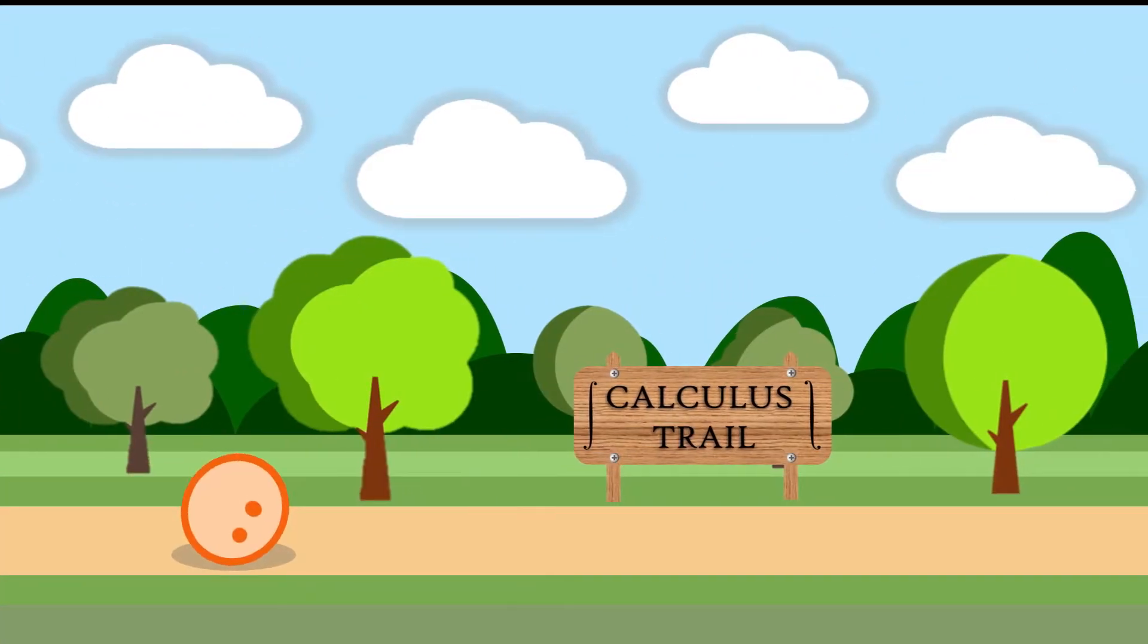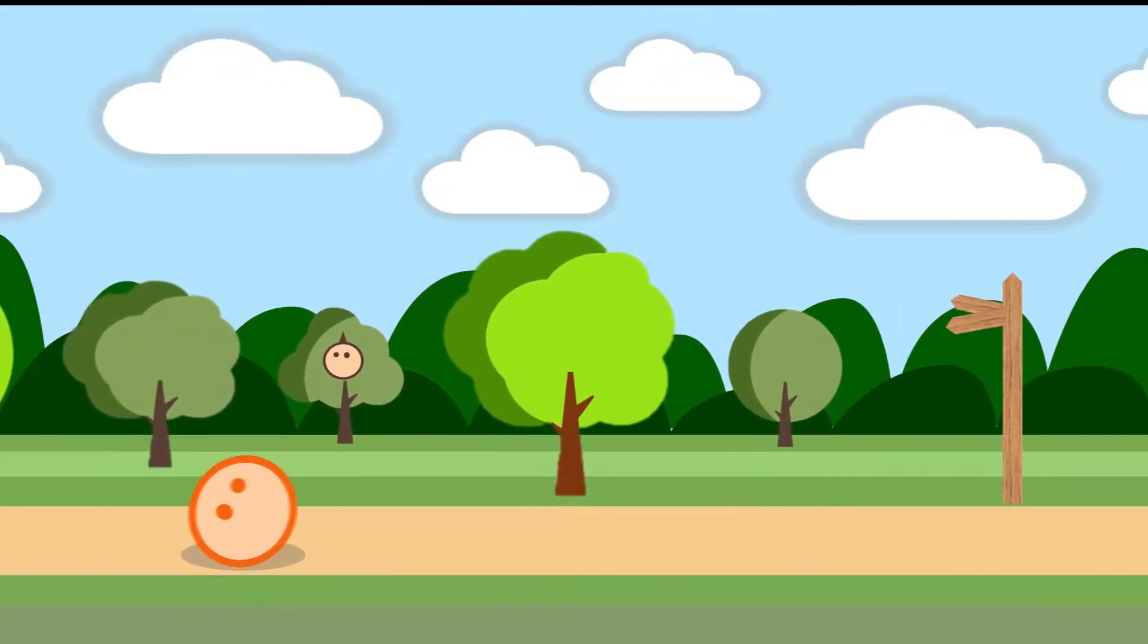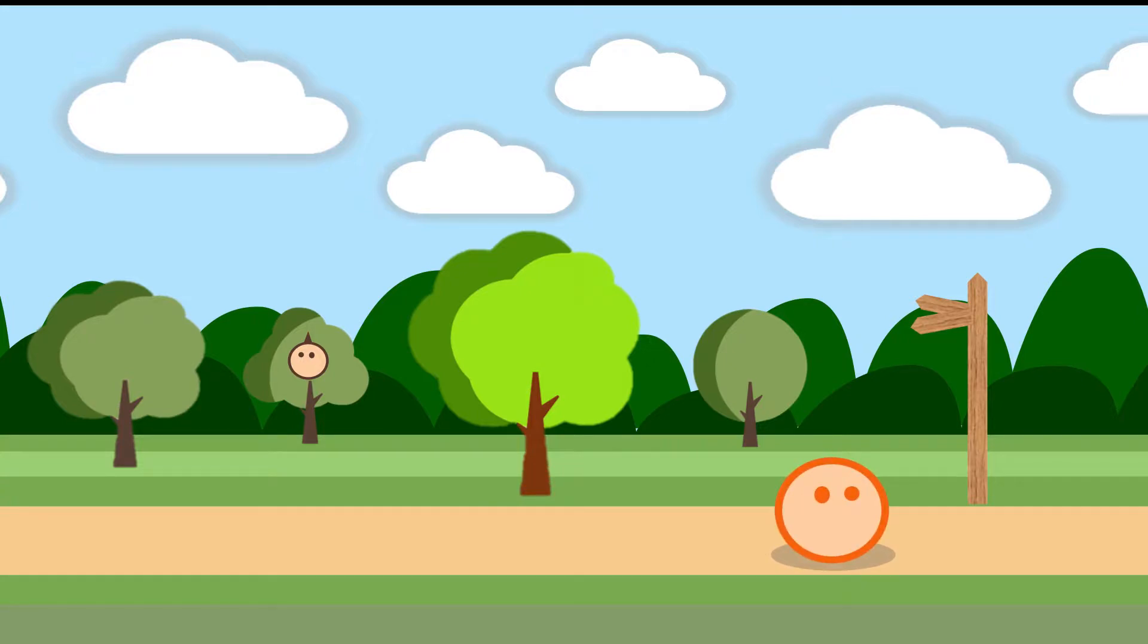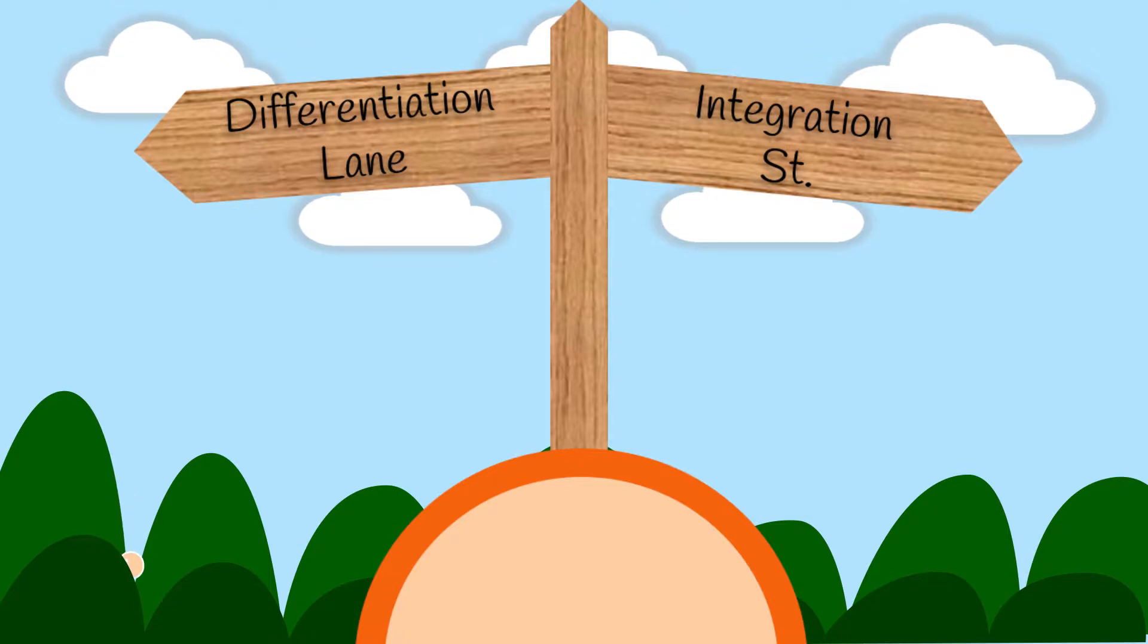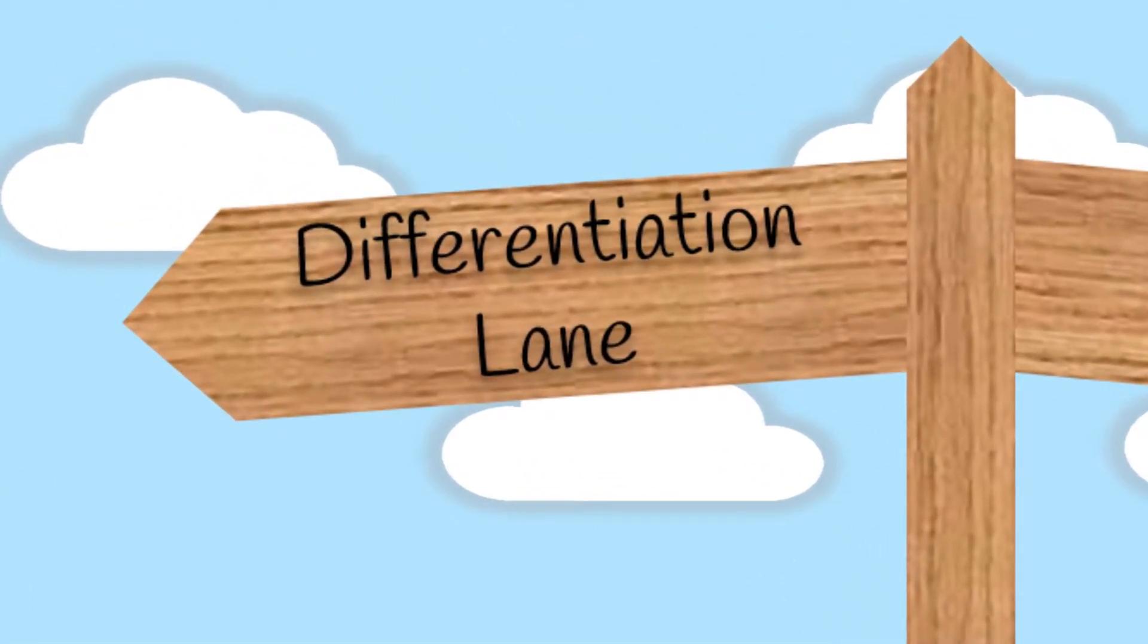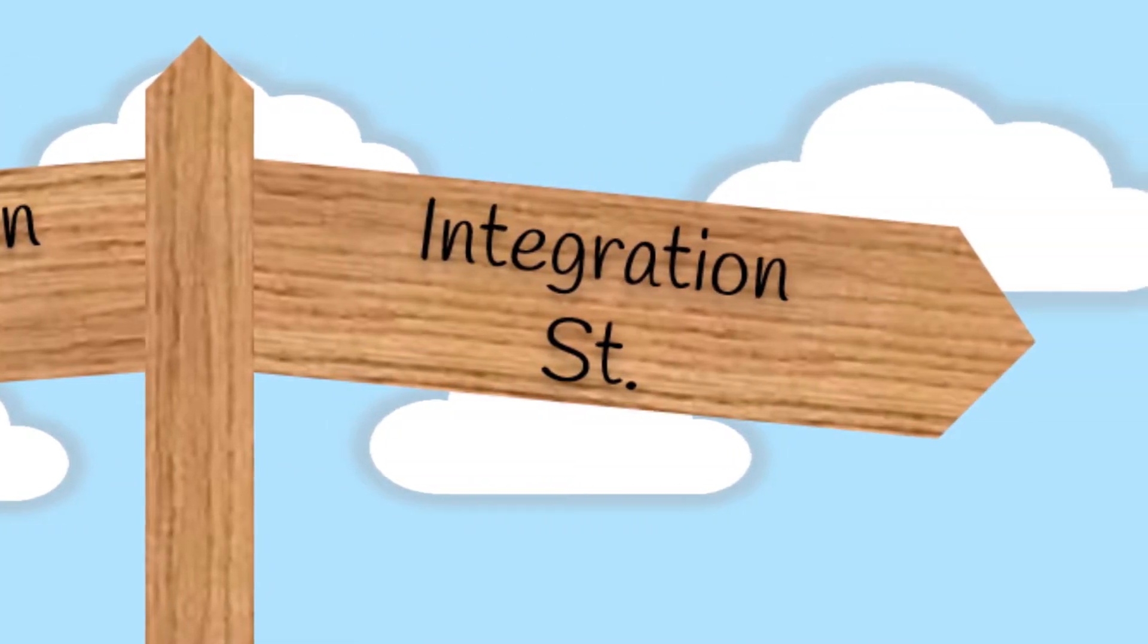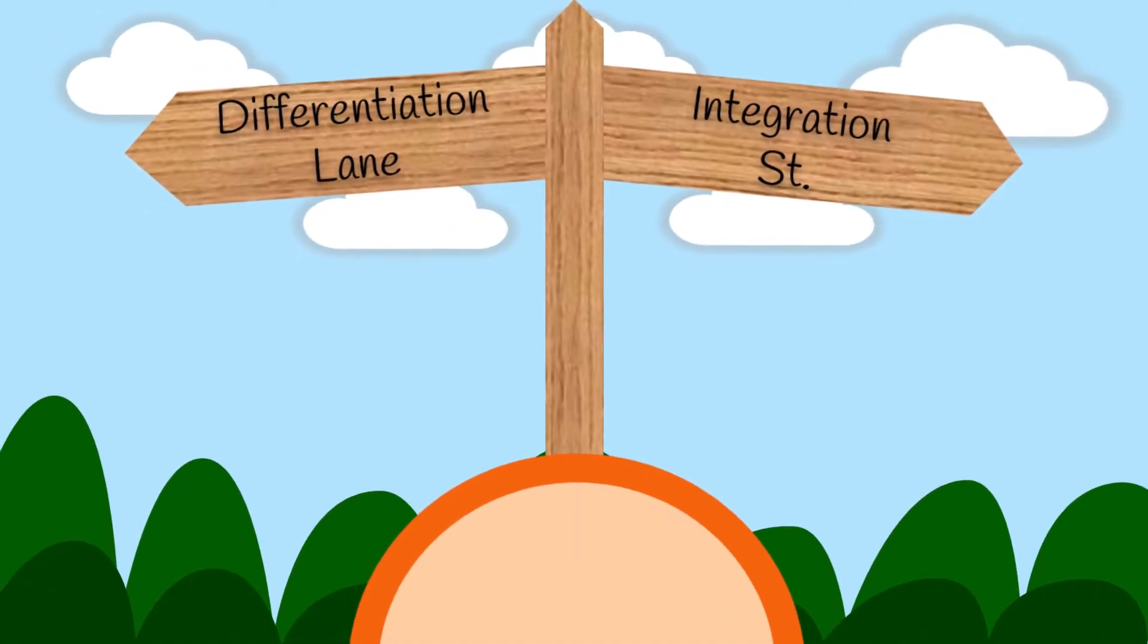So you're rolling your way down the calculus trail one day and you decide to stop at the signpost that you always pass on your way home. And on the signpost you see that to your left is differentiation lane which is the path you always take home and to the right is an unfamiliar path called integration street. And you begin to wonder which way you should go.